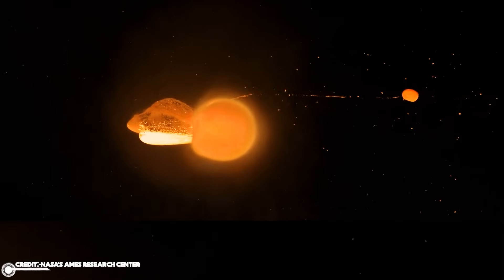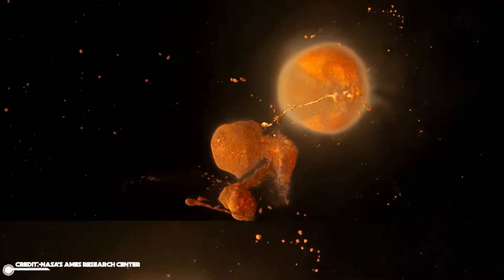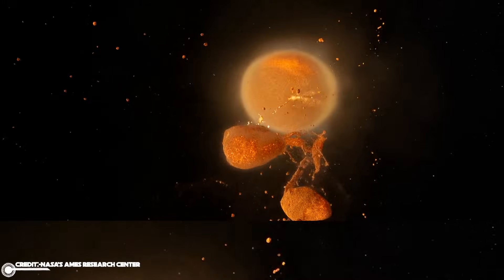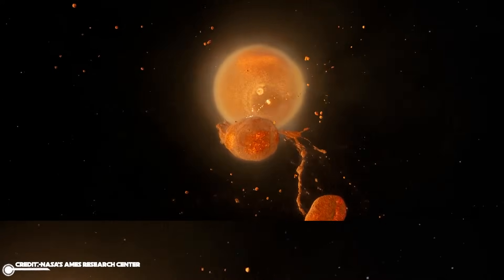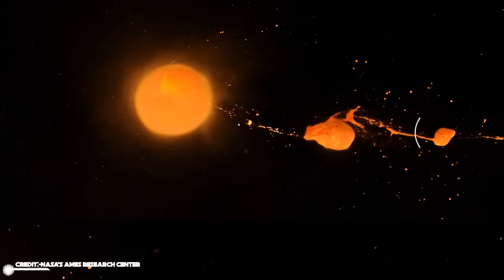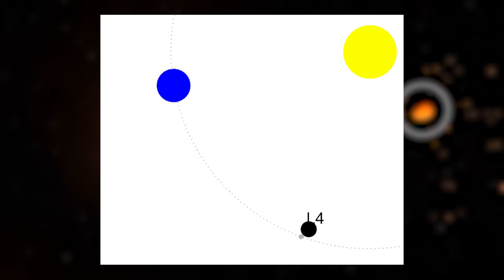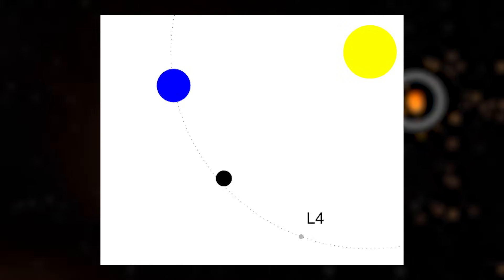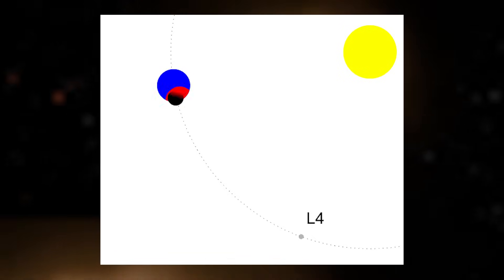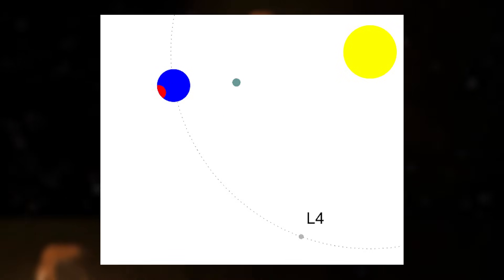Proponents of this theory argue that Theia and Earth crashed into each other head-on, and the collision caused part of young Earth's crust and Theia itself to be vaporized and sent to space. The debris in space was then drawn together by gravity, ultimately forming the Moon. In this animation, you can see Theia colliding with the Earth, the blue circle, during its orbit around the Sun and creating debris in red, gravitationally creating our Moon, the gray circle.